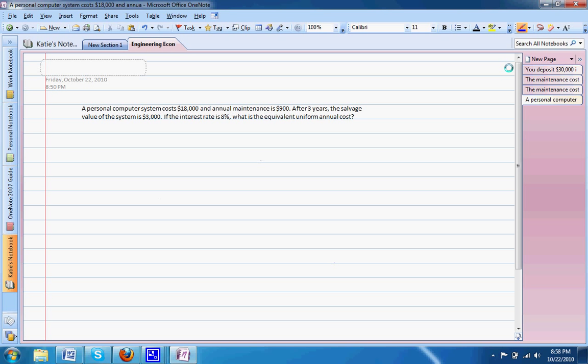Let's go ahead and start with our cash flow diagram. We know that in year 0, we make our purchase for $18,000. And after 3 years, the system is worth $3,000.